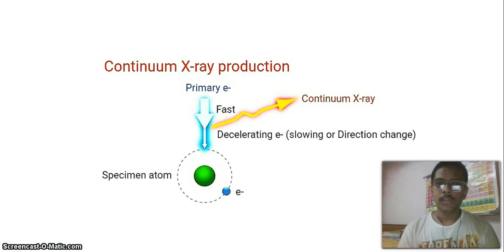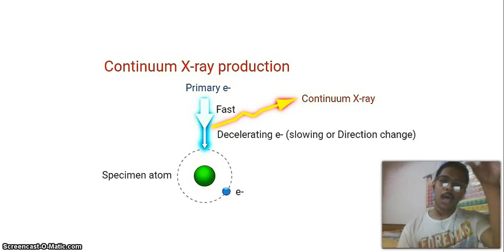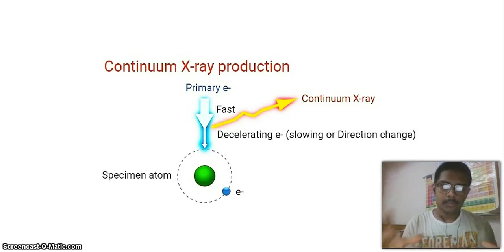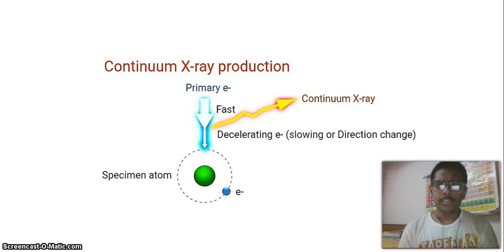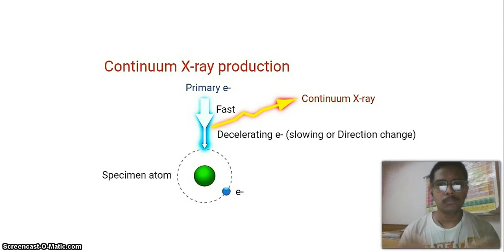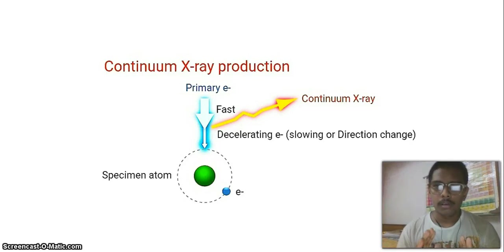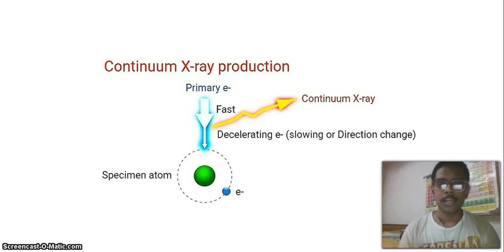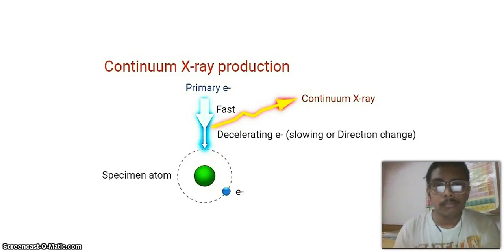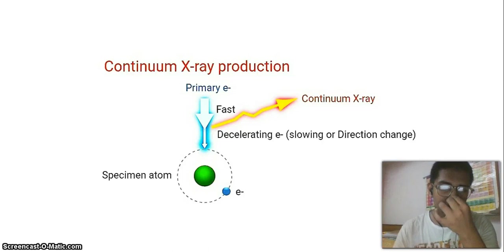Continuum X-ray production actually happens by the falling of a primary electron beam on the surface of the specimen. Along with other collisions, there is generation of continuum X-ray. This X-ray is the main ingredient for spectra formation for different elements in EDS spectroscopy. The first main message is that X-rays are generated upon the interaction of the primary electron beam with the surface atoms present in the specimen.